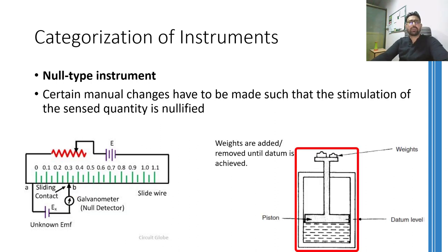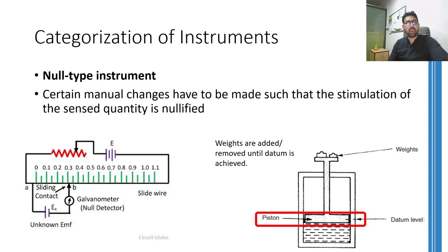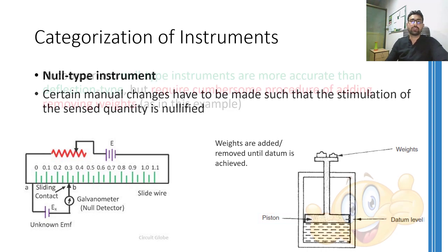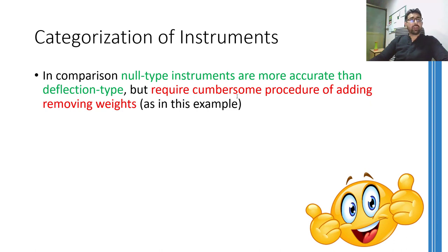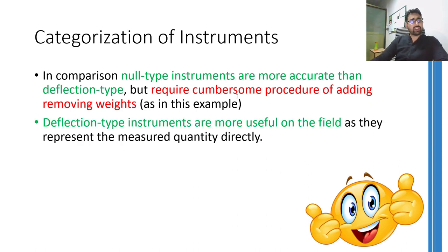Another example of null type instrument is a pressure measuring instrument shown in this schematic. The pressure of the fluid will raise the platform above the datum point. Therefore, downward force is applied on the piston by placing some weights on it. If the downward force applied by the weights become equal to the force applied on the piston by the pressurized fluid, then the piston will be at datum point. At this moment, the amount of weight will be directly proportional to the pressure of the fluid. Normally, null type instruments are much more accurate than deflection type instruments and therefore are used for calibration purposes. Note that deflection type instruments are easier to use and therefore are installed at suitable locations in any factory floor, whereas null type instruments are cumbersome to use and therefore are seldom used on the factory floor.